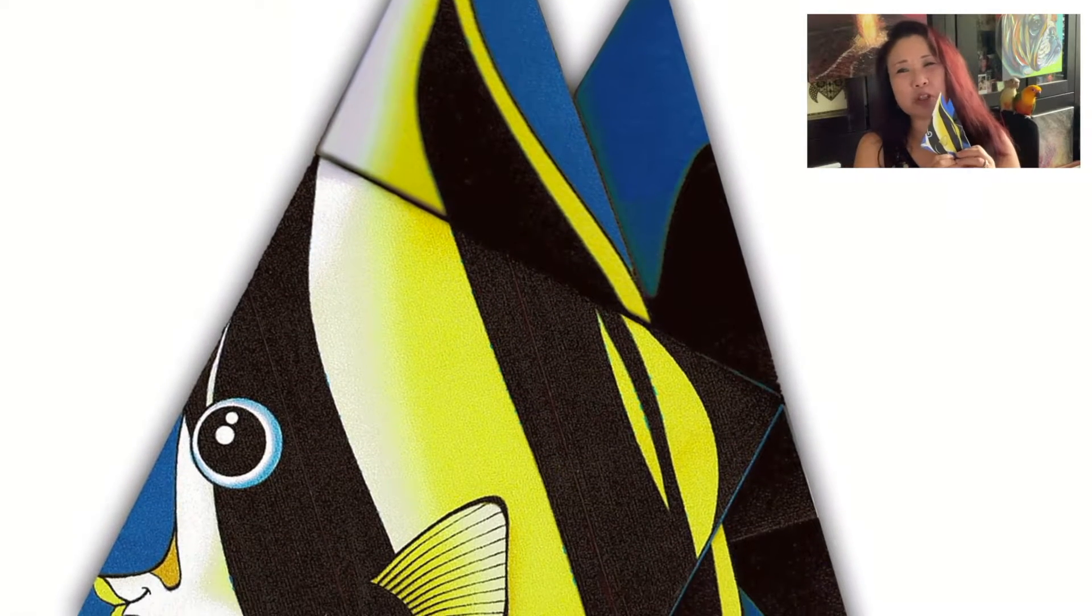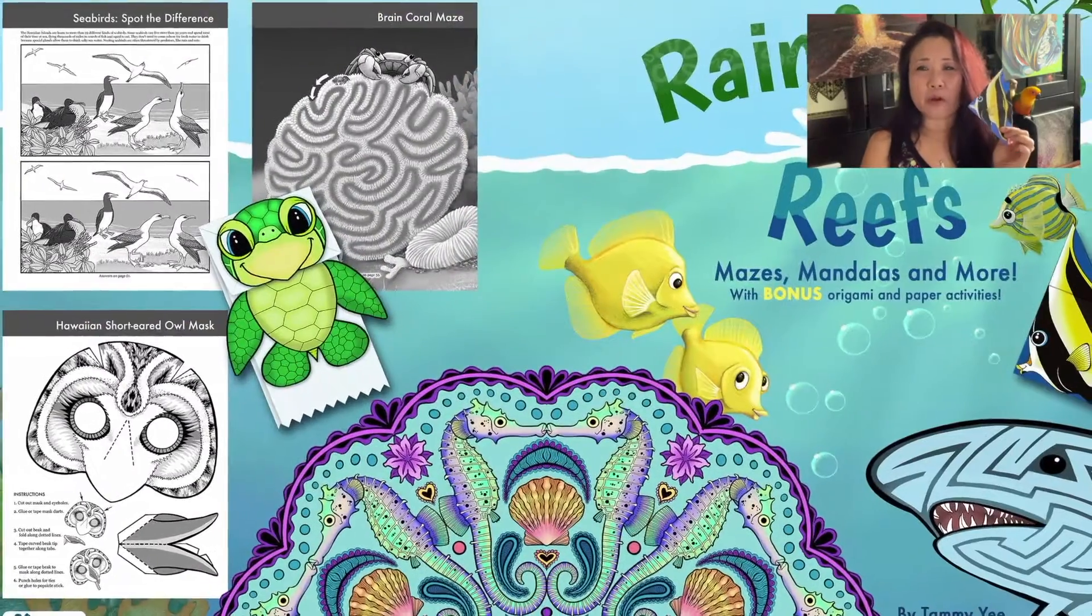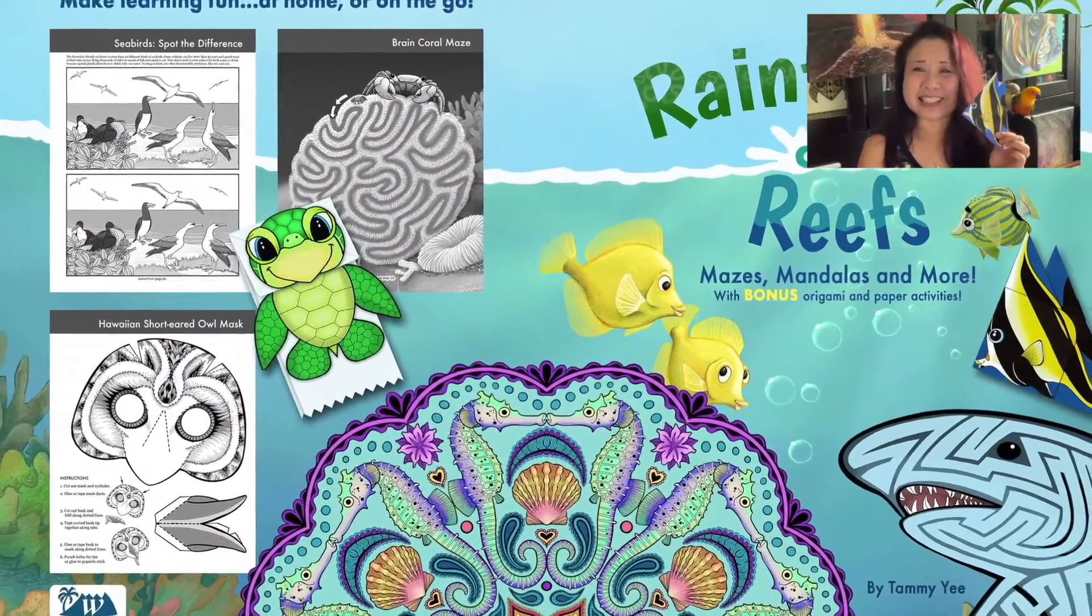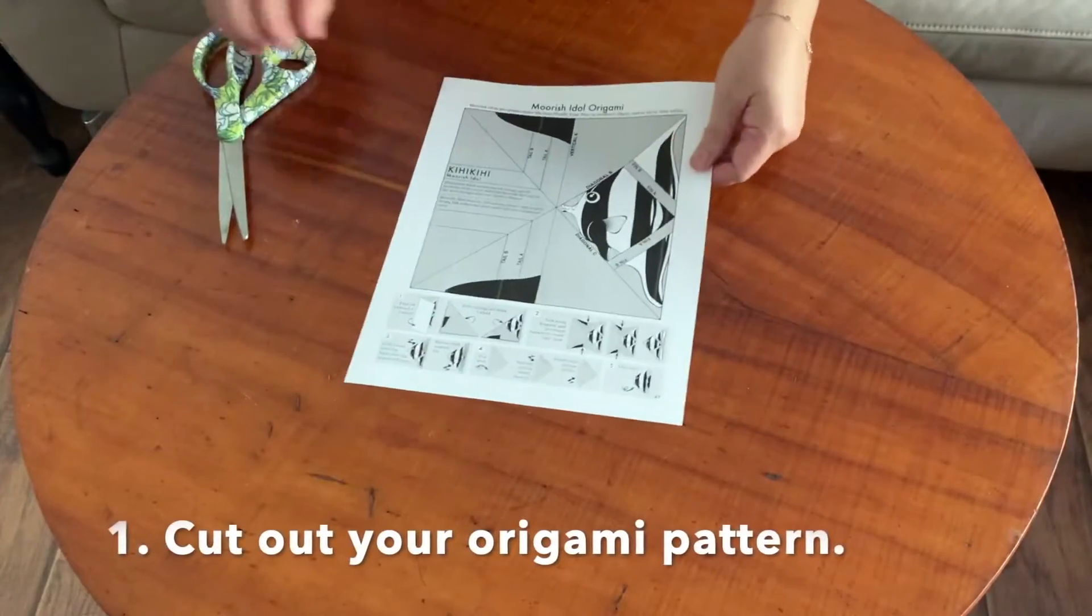Hi, this video will show you how to fold a Moorish Idol Origami and this can be found in my book Rainforests and Reefs. So let's get started. Cut out your origami pattern.